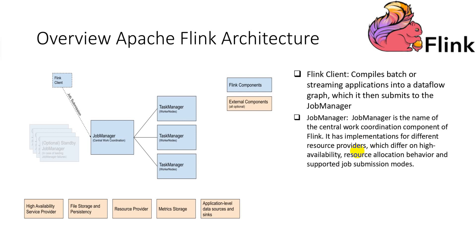Flink supports three application deployment models. The application model runs the cluster exclusively for one application. The per-job model runs the cluster exclusively for one job, and the main method runs only prior to cluster creation. The session model has one job manager instance managing multiple jobs sharing the same cluster of task managers.